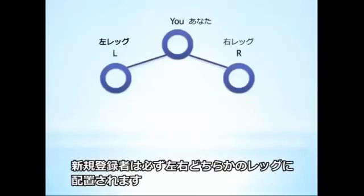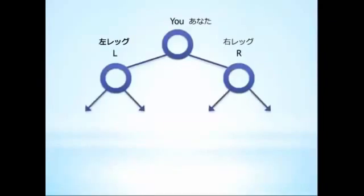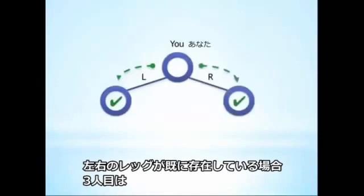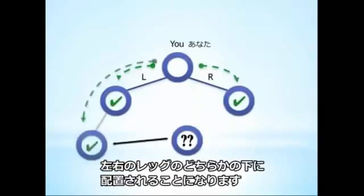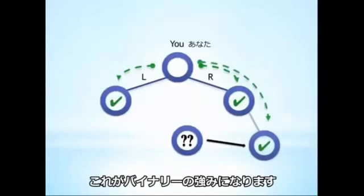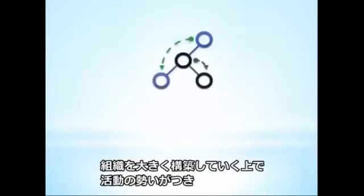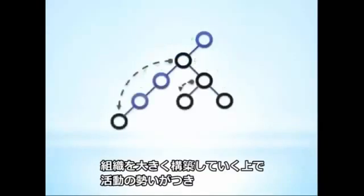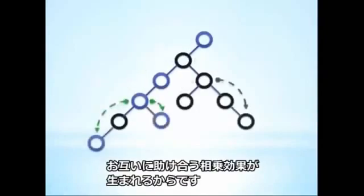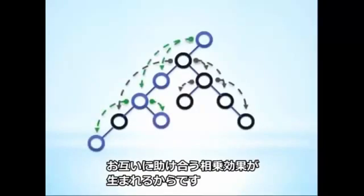Everyone you contact who joins your business will be placed in one of these two legs. Once you have someone on each side and you go to enroll a third person, they must be placed under one of the previous two. This is one of the advantages of a binary — it encourages momentum and synergy within an organization because people end up helping each other build larger and larger networks.